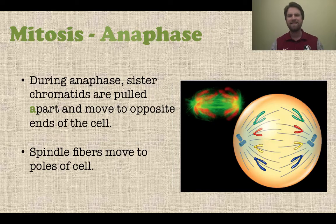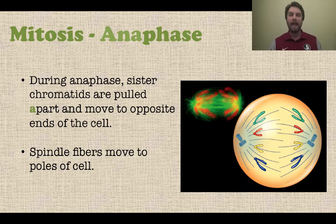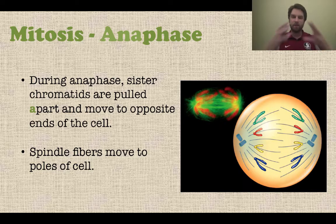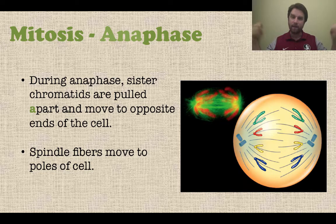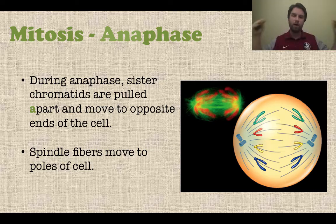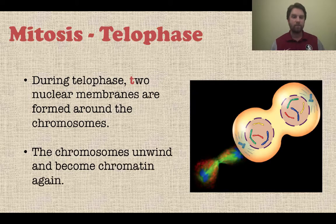Next is anaphase. During anaphase, sister chromatids are pulled apart and they move to opposite ends of the cell. You can see those spindle fibers pulling those sister chromatids apart and pulling them to opposite ends of the cell.